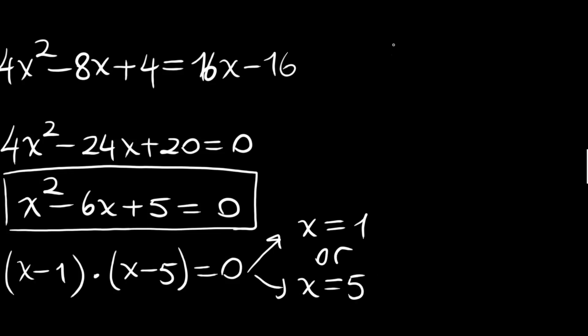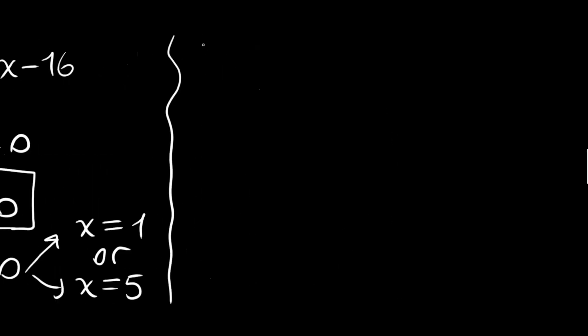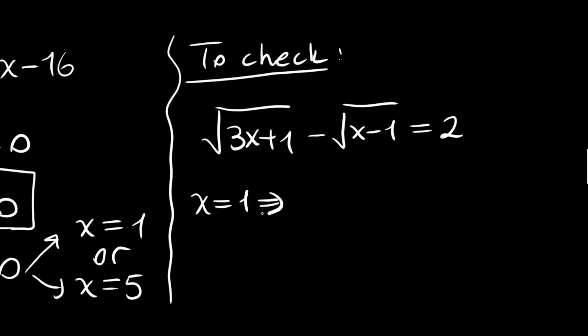Now these numbers need to be checked. Let's check our x values. For x is equal to 1, let's remember our original equation: it was root 3x plus 1 minus root x minus 1 is equal to 2. For x equals 1, we have root 4 minus root 0. This is 2 minus 0, which equals 2. That is correct.